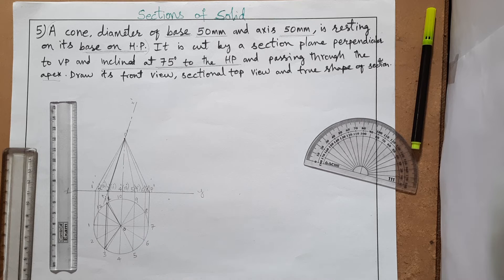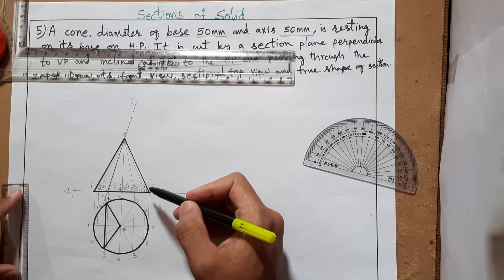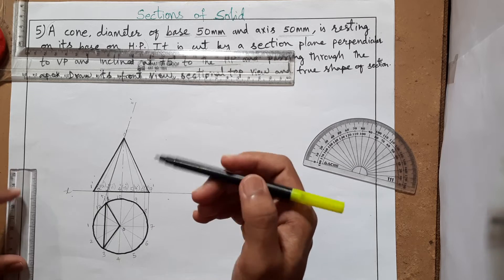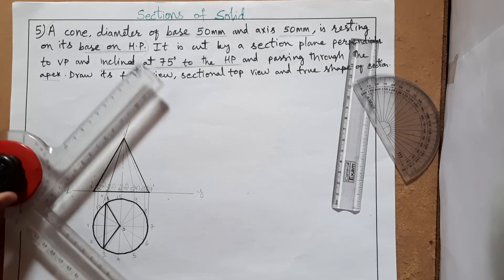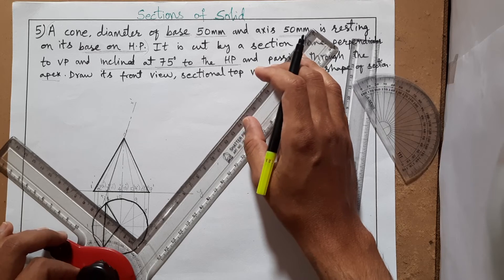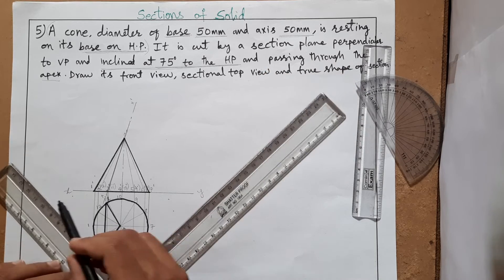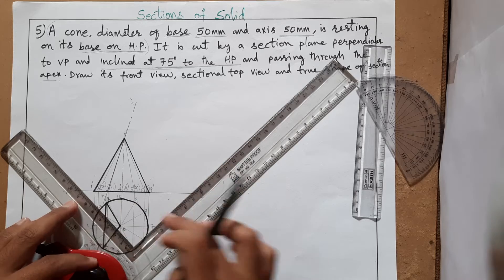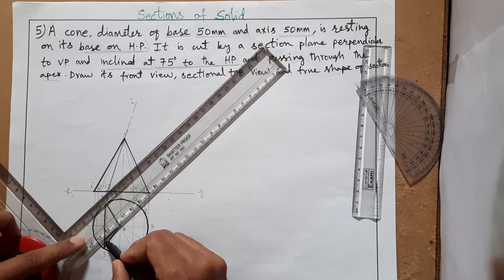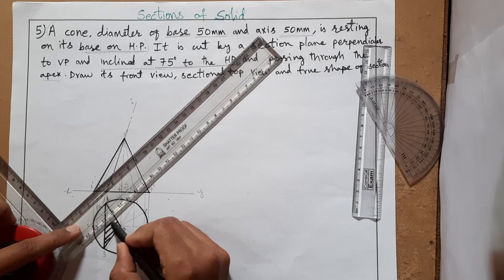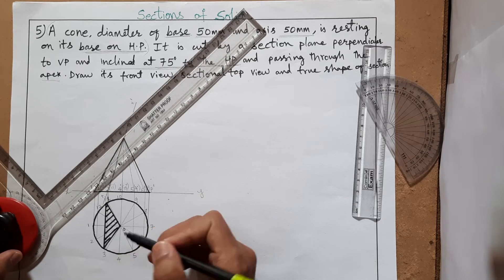Make all visible lines darker and then do hatching on the sectioned area. Hatching lines should be drawn at 45 degrees, equally spaced approximately 2mm apart. Set the mini drafter at 45 degrees by aligning with the XY line at equal numbers on both sides, then draw the hatching lines across the bounded section area.